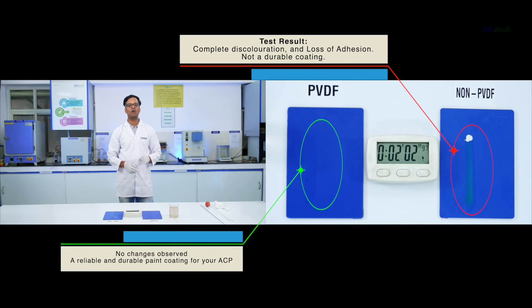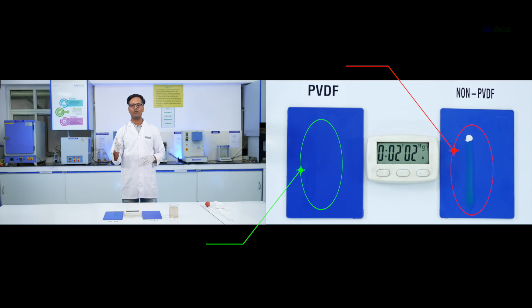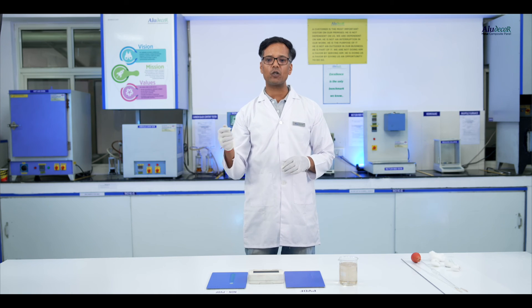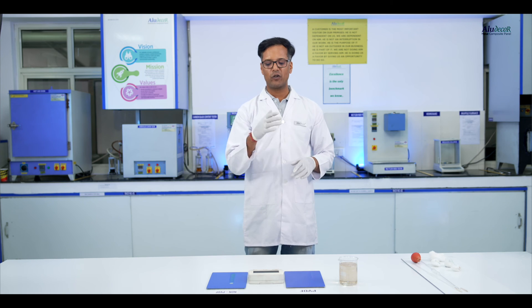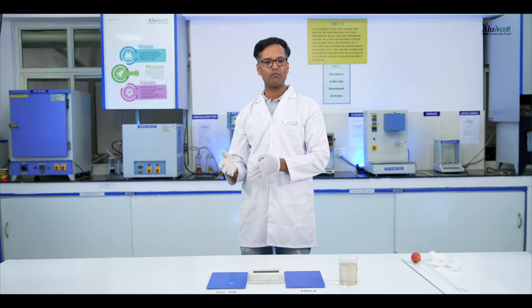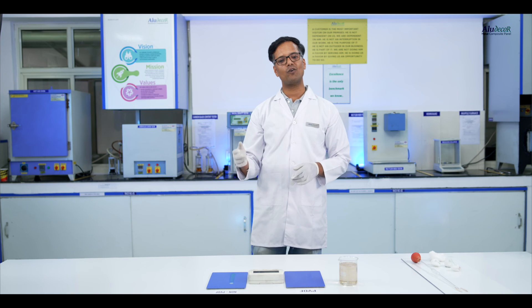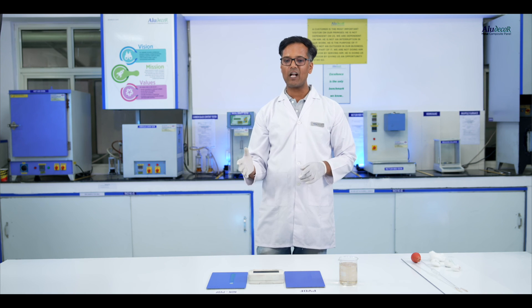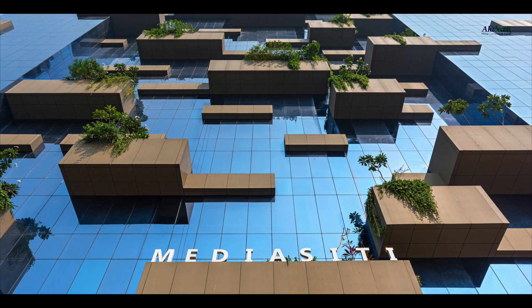So this is how you can also quickly check the quality of paint of your ACP samples. Though this is a subjective test, however, it is an effective quick check to ensure what kind of paint coating your ACP sheet has. Is it PVDF or non-PVDF? Hope this information will be highly helpful for you to identify the right product for your facade.